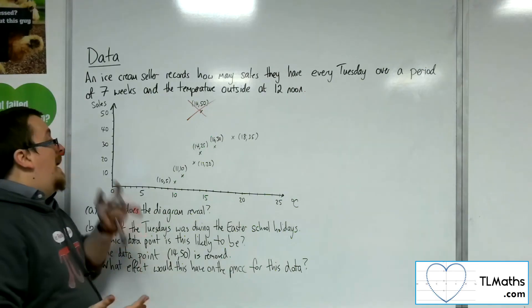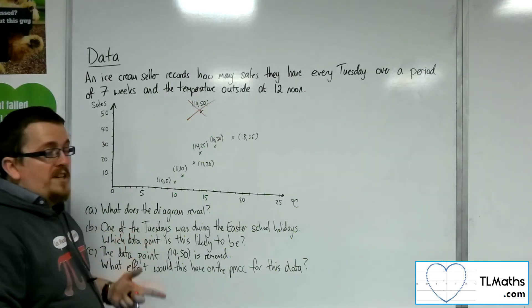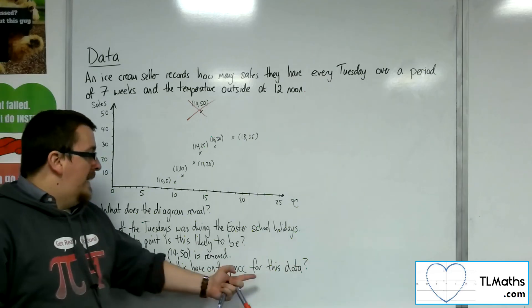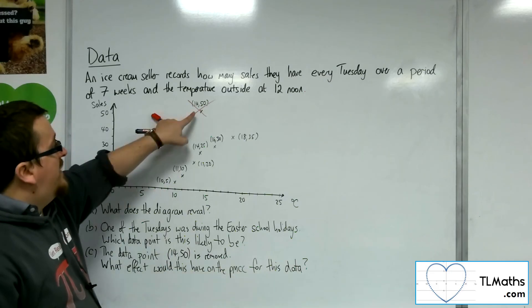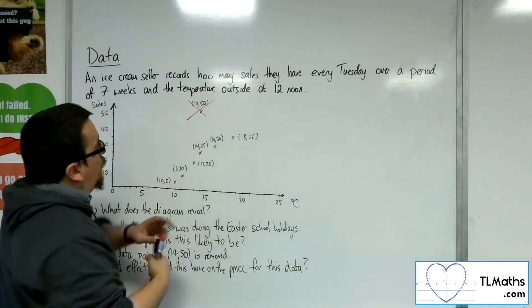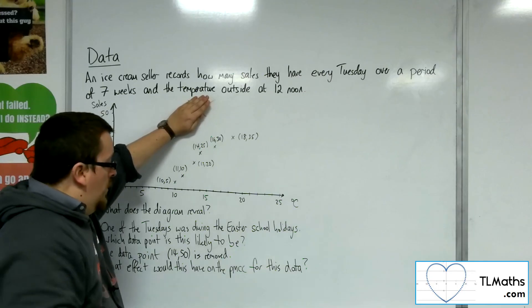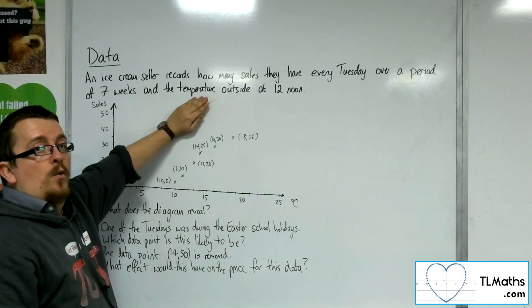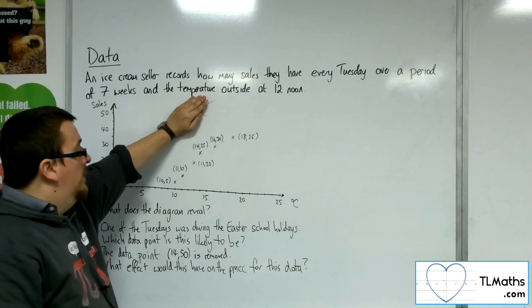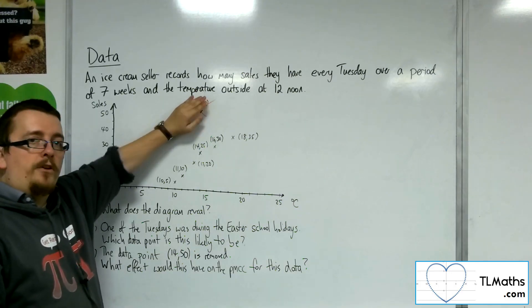Well, we'd probably be expecting that the value of R for this data would be reasonably close to 1, but what will happen is that with that data point removed, the data now looks more like it is in a straight line, and so the value of the product moment correlation coefficient would get closer to being 1, okay, and so you would have stronger positive correlation because of it.